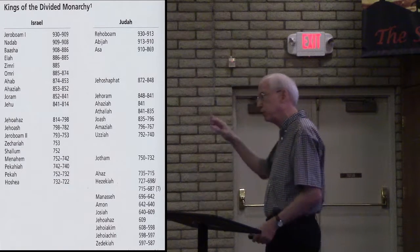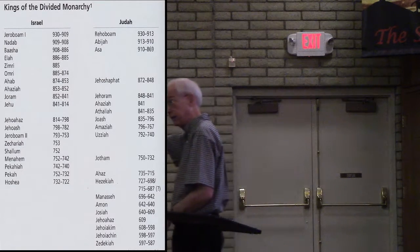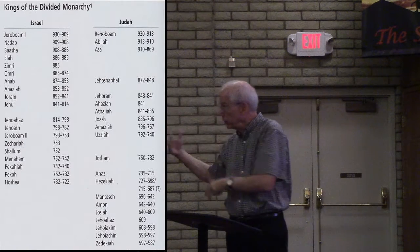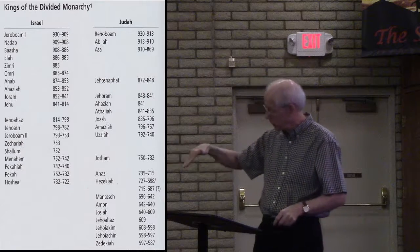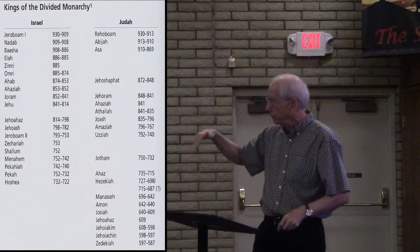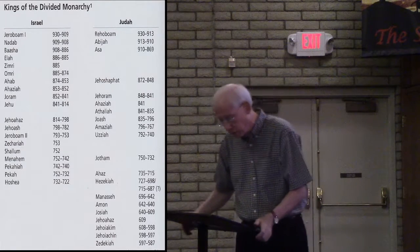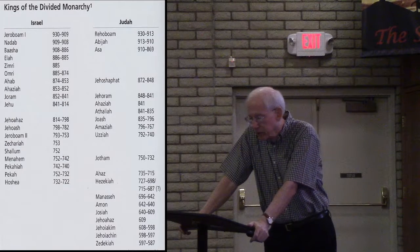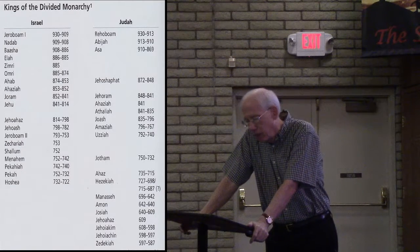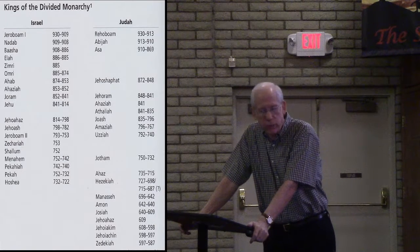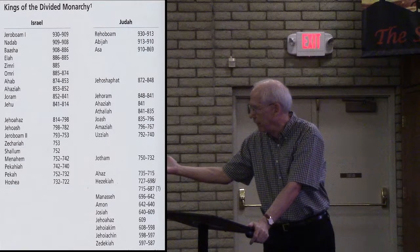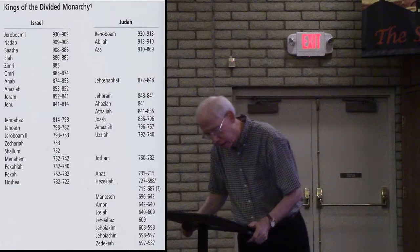His son Ahaziah — the surviving son — under the counseling of his mother Athaliah, the daughter of the wicked Ahab and Jezebel, walked in the ways of the kings of Israel. Meaning he was a bad king; he followed in their footsteps.